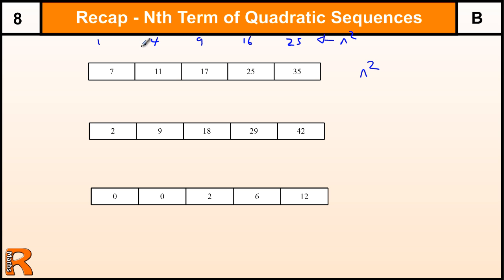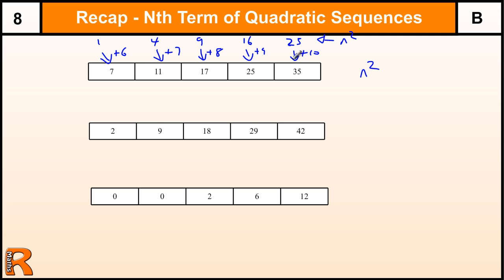What have I got to do to this sequence to get to this one? Well, I've got to add 6 here, then add 7 there, then add 8, then add 9, then add 10. So I'm adding another sequence — and this sequence isn't just one number, but it's a separate sequence, a separate linear sequence.